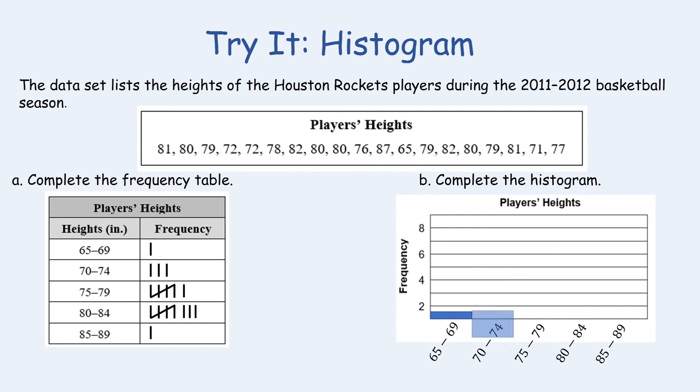So 65 to 69 had a frequency of 1, 70 to 74 had a frequency of 3, 75 to 79 had a frequency of 6, 80 to 84 had a frequency of 8, and 85 to 89 had a frequency of 1. So your histogram should look similar to mine.